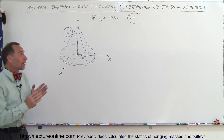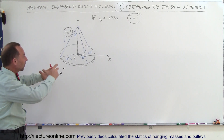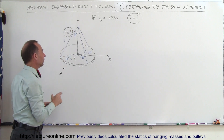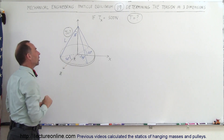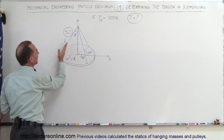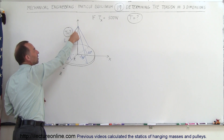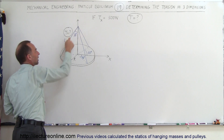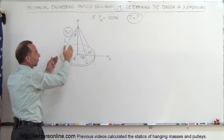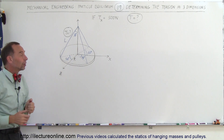Welcome to Electron Online. We have a big metal disc suspended from three wires, all connected at a single point. The radius of the disc is equal to R, and we're going to calculate the tension in one of these lines. All lines make an angle of 30 degrees between the lines and the vertical, and they all come out to the edge of the disc.